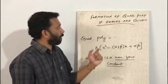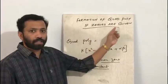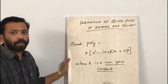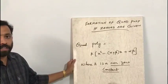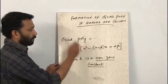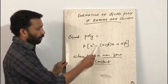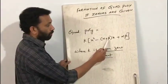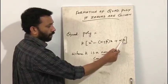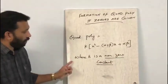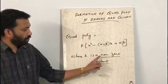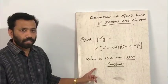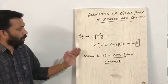Formation of Quadratic Polynomials if zeros are given. In the previous lecture you learned how to form a quadratic polynomial if alpha and beta are the zeros. The quadratic polynomial is equal to k into x squared minus (alpha plus beta) into x plus alpha beta, where alpha plus beta is the sum of the zeros and alpha beta is the product of zeros. Here k is a non-zero constant. To understand this concept we will do some examples.